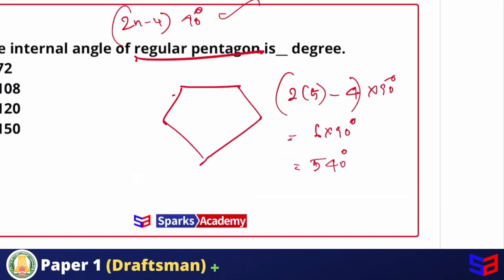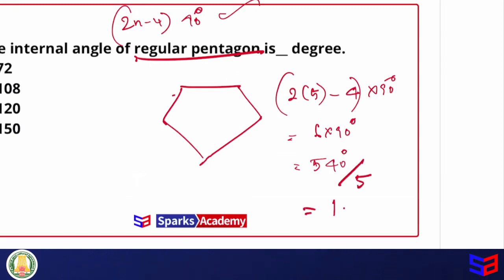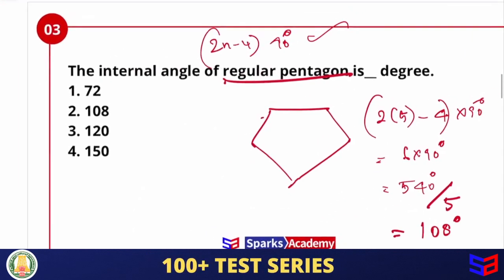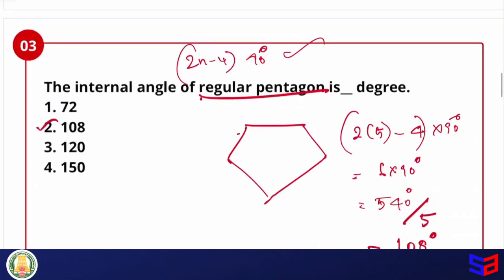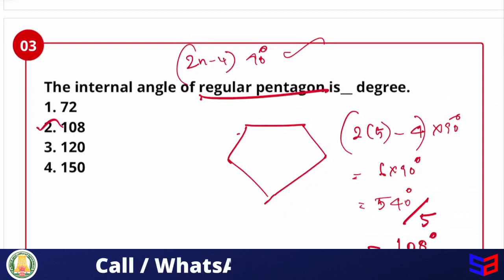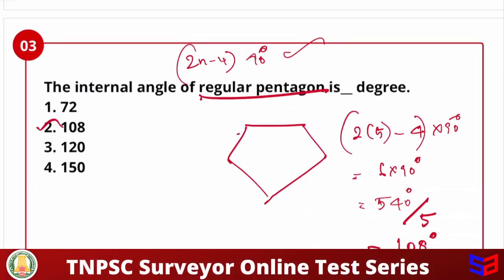The summation of internal angles for a regular pentagon with 5 sides is 540 degrees. Divided by 5 sides, each internal angle equals 108 degrees. Note: if the question asks for the summation of internal angles, the answer is 540; if it asks for each internal angle, the answer is 108. Check the option carefully — 540 may be listed as an option.